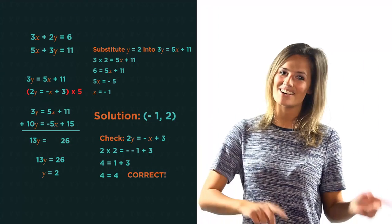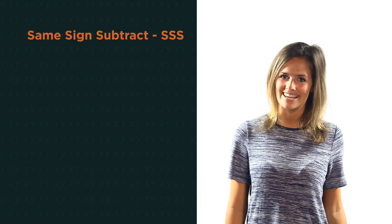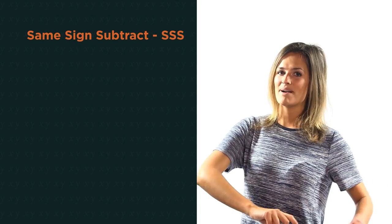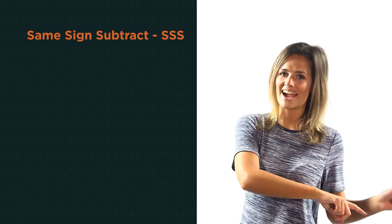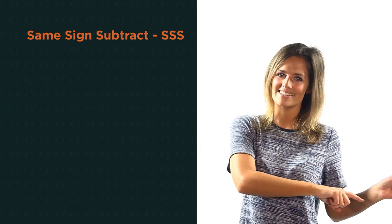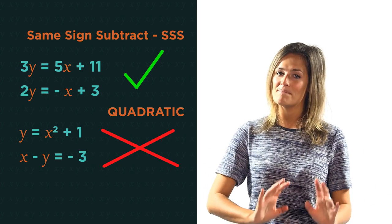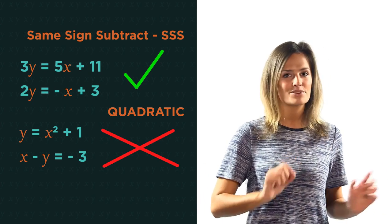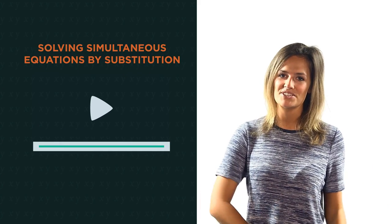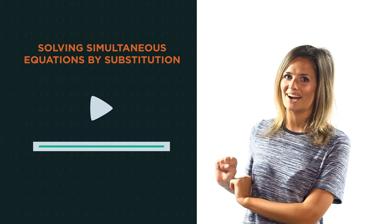So there we have solving simultaneous equations by elimination. You just need to remember, same sign subtract. This works perfectly for linear equations, but won't work if there's a quadratic involved, for example. For that, we have to use substitution. Watch this video to discover how.